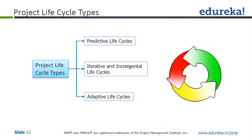Iterative and incremental life cycles are usually used for complex projects. You essentially intentionally repeat one or more project activities as the project team's understanding of the product increases. That's what we do in iterative and incremental life cycle — mainly used for complex projects.